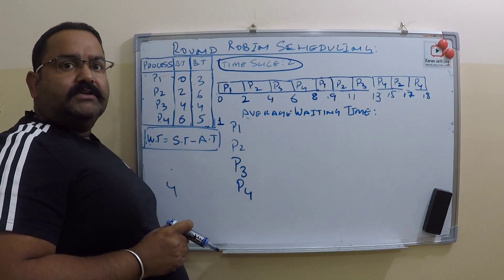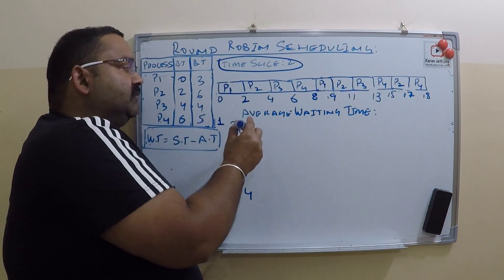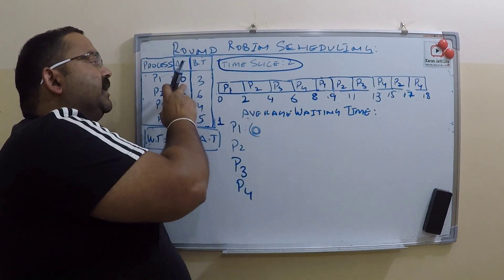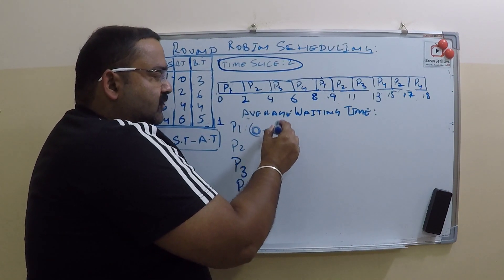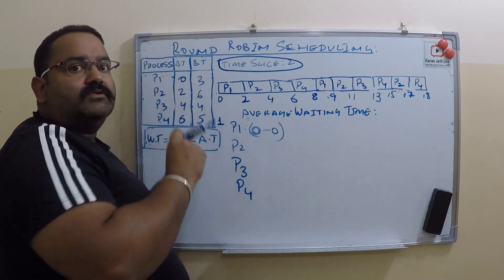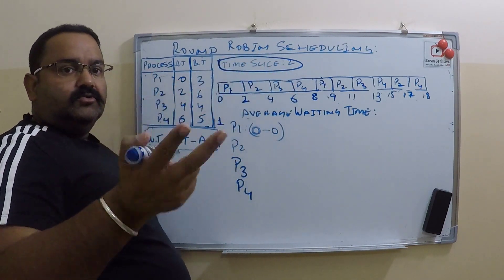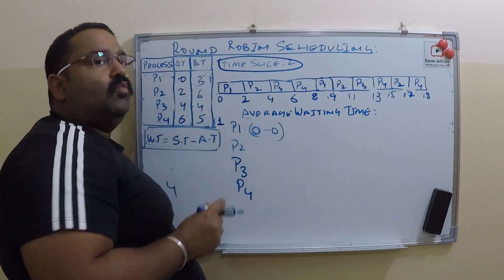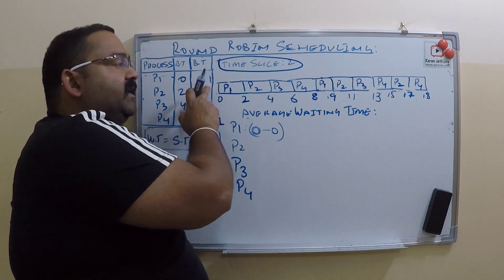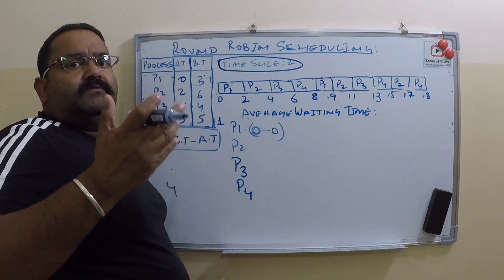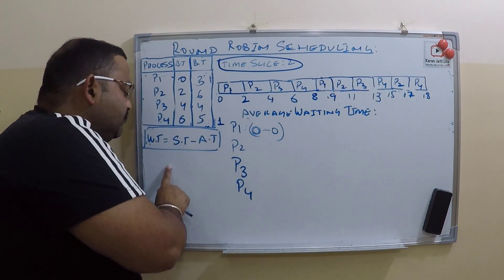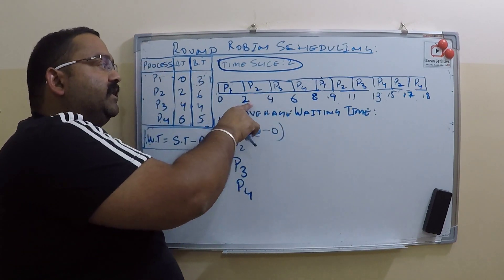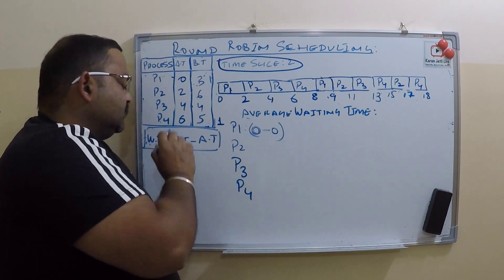Here is process P1. What is the starting time for P1? That is time 0. And what time did P1 arrive? It arrived also at time 0. P1's burst was 3 seconds and our time slice is 2 seconds. So P1 processed for 2 seconds — and how much burst is still left? 1 second. So P1 will go back to the wait queue, arriving there at time 2.